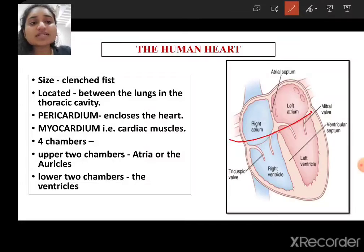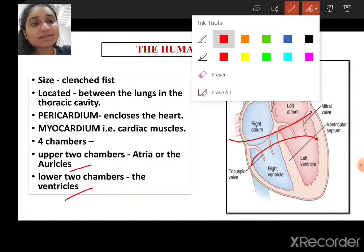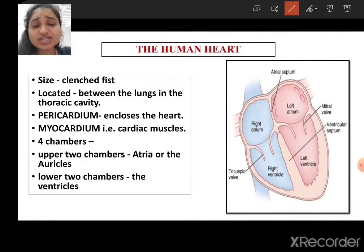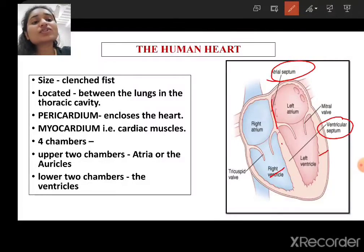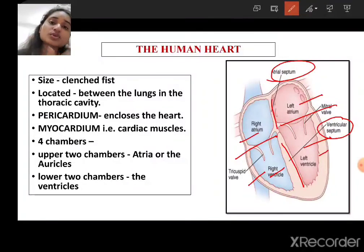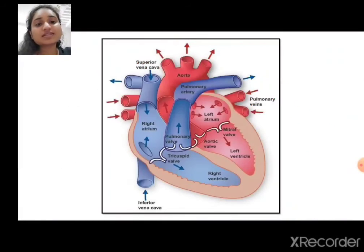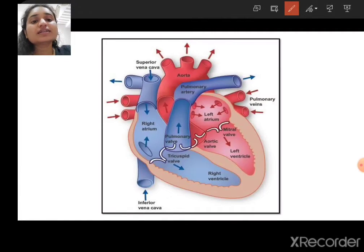The upper two chambers are known as atria or auricles, and the lower two chambers are known as ventricles. The atria and ventricles are separated by septa. Both atria are separated by the atrial septum, which is thin, and both ventricles are separated by the ventricular septum, which is thicker. The right atrium and right ventricle, and left atrium and left ventricle, are also separated by the atrioventricular septum, which is also thicker. You can see the more detailed structure in this diagram.